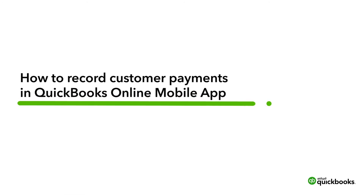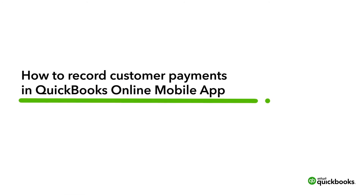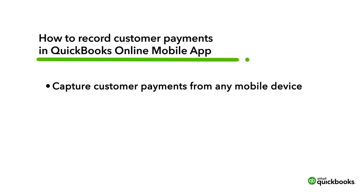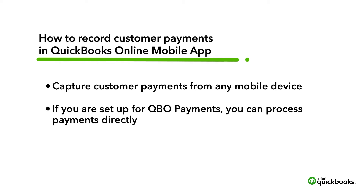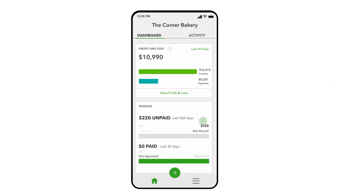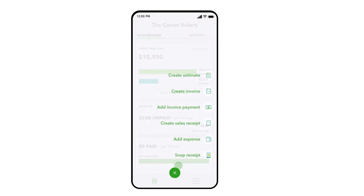Using the QuickBooks Online Mobile App, you can record a customer payment, and if you are using QuickBooks Online Payments, you can process that payment directly through your phone. Let's enter a customer payment in the QBO Mobile App by selecting the Invoice Pay shortcut from your dashboard.